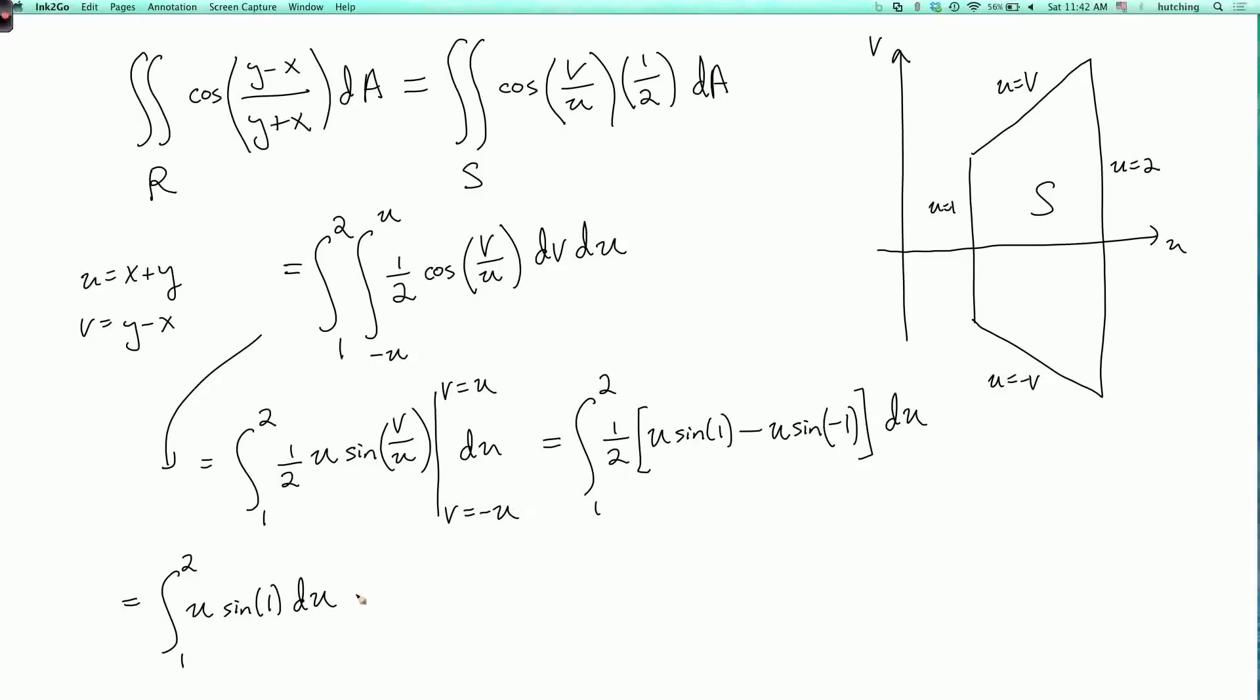And now the sine of 1 is like a constant. So I just get sine of 1 over 2 times u squared, evaluated at u equals 2 and u equals 1. So I get sine of 1 over 2 times 3. So I get 3 over 2 times sine of 1.